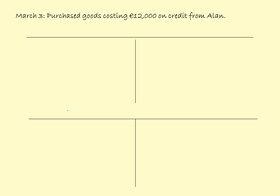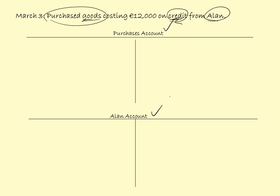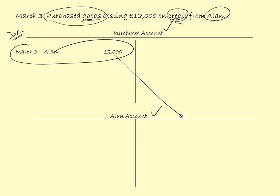March the 3rd: purchased goods costing 12,000 on credit from Alan. Purchased goods is a special account called purchases — these are goods that are for resale. On credit means no money changed hands, so we need an account for Alan. You always debit purchases, so on the debit side: March the 3rd, Alan, 12,000. And the double entry will be on the credit side of Alan's account: March the 3rd, Purchases, 12,000.